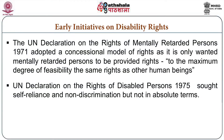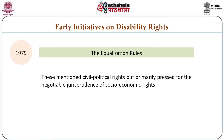In 1975, the UN adopted the Declaration on the Rights of Disabled Persons. This sought self-reliance and non-discrimination, but not in absolute terms — once again in somewhat relative terms. Some equalization rules were initiated in 1993, which mentioned civil and political rights, but primarily pressed for negotiable social-economic rights.